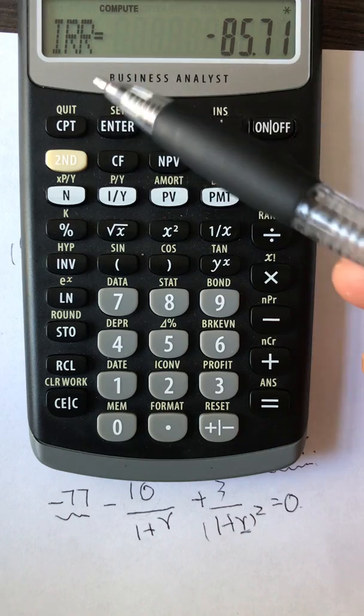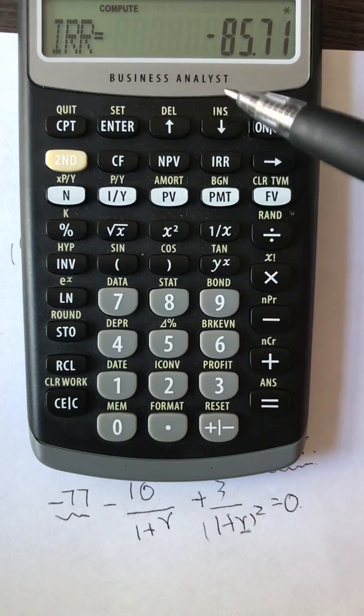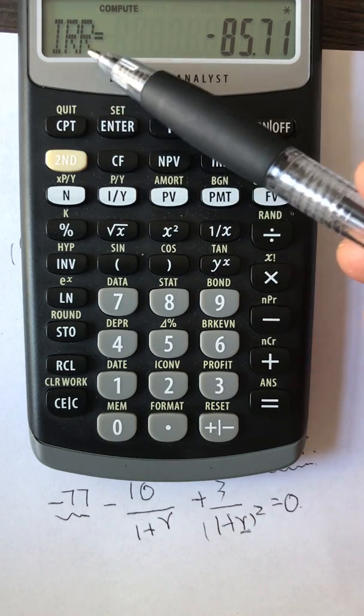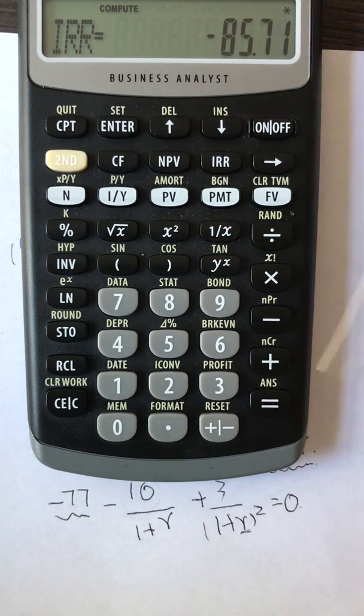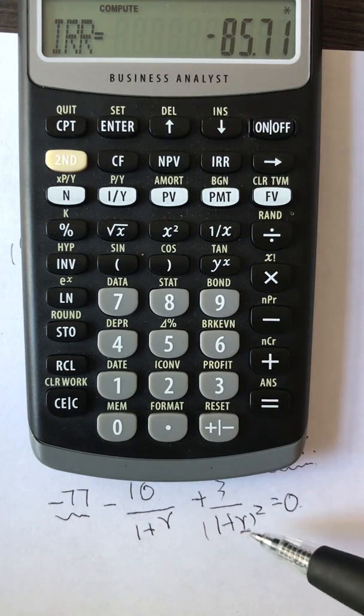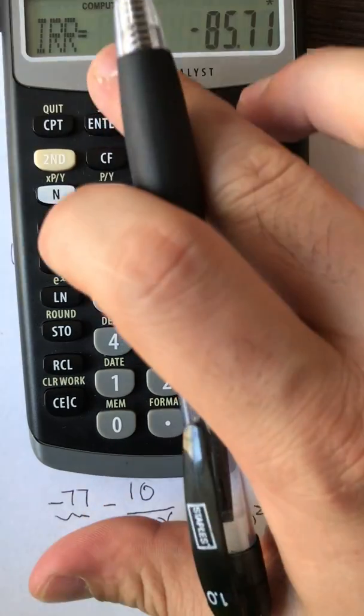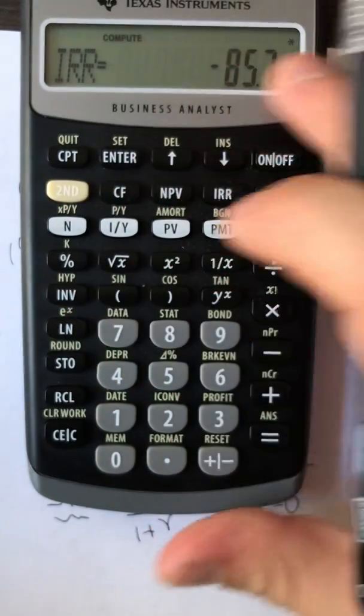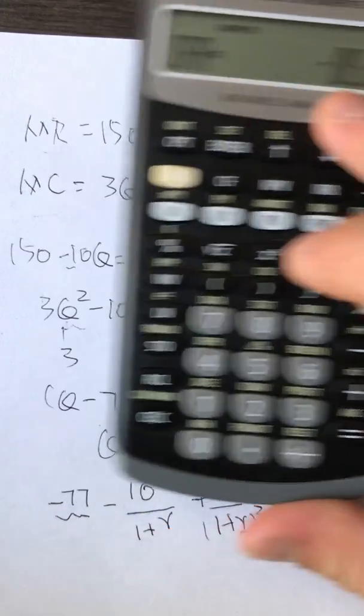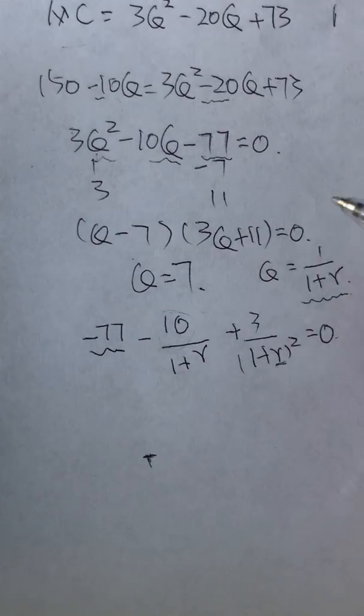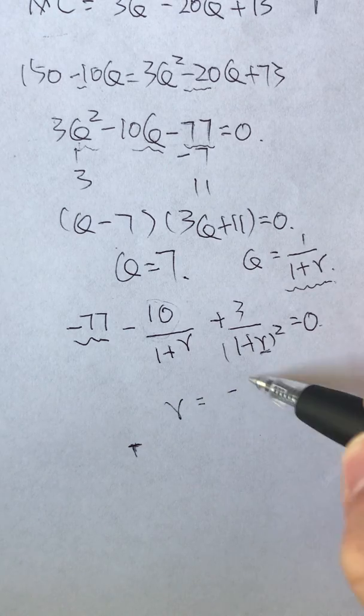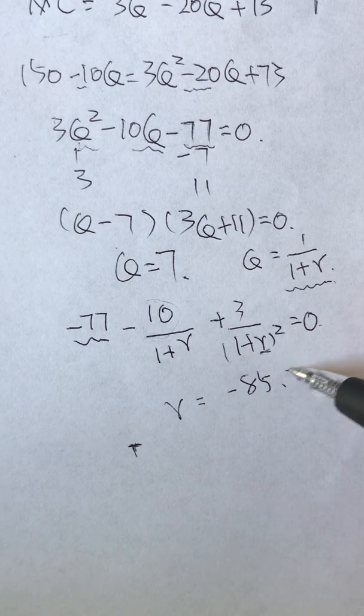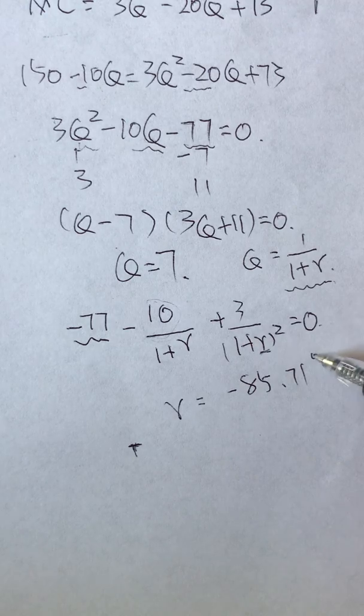In the financial calculator, the IRR, the unit of measurement is always in percentage. So in this case, our r, the IRR is negative 85.71. So r equals negative 85.71 percent.